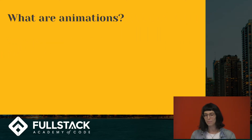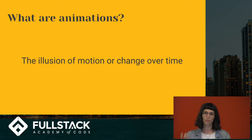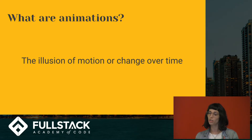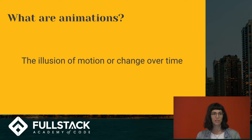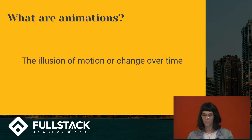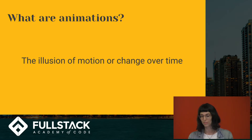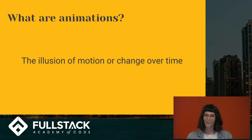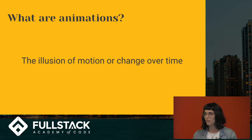So first off, what are animations? In a really basic definition, it's the illusion of motion or change over time. Something changes from one color to another, from one position on the screen to another, or opacity from very transparent to full color. This illusion of motion is really important because we experience motion naturally in the natural world, and incorporating that natural movement into our sites and apps gives everything a very natural feeling.